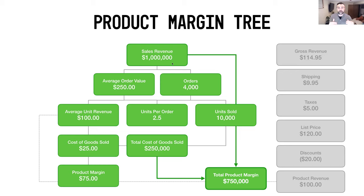From there we looked at units per order — taking your 10,000 units sold divided by your 4,000 orders to arrive at 2.5 units per order. Similarly, $250 average order value divided by $100 average unit revenue also gives you 2.5. When we talked about average unit revenue, we also looked at the average cost of goods sold so you could go $100 minus $25 to end up with your average product margin of $75.